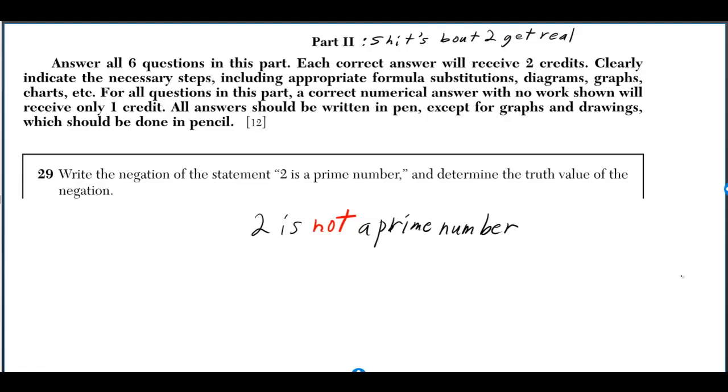Write the negation of the statement '2 is a prime number' and determine the truth value of the negation.